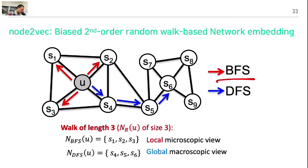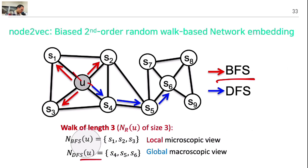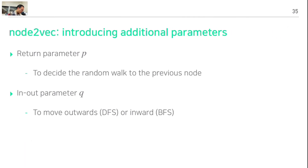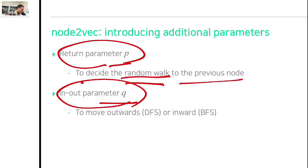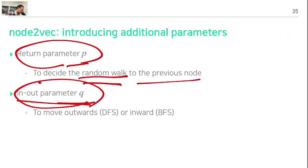With BFS our traversal stays local; with DFS it goes outward. To interpolate between these two views, we parameterize the random walk using two parameters: the return parameter p, which controls the probability of returning to the previous node, and the in-out parameter q, which decides whether the walk moves inward or outward.